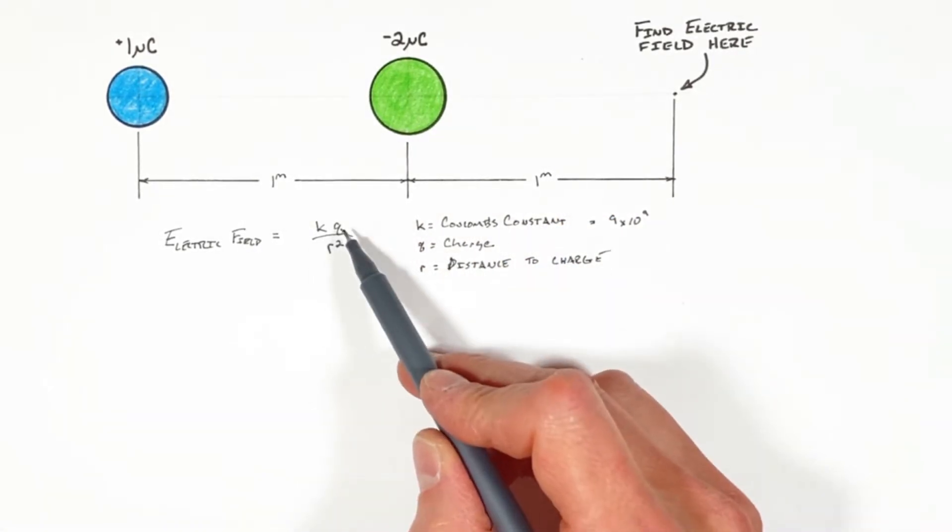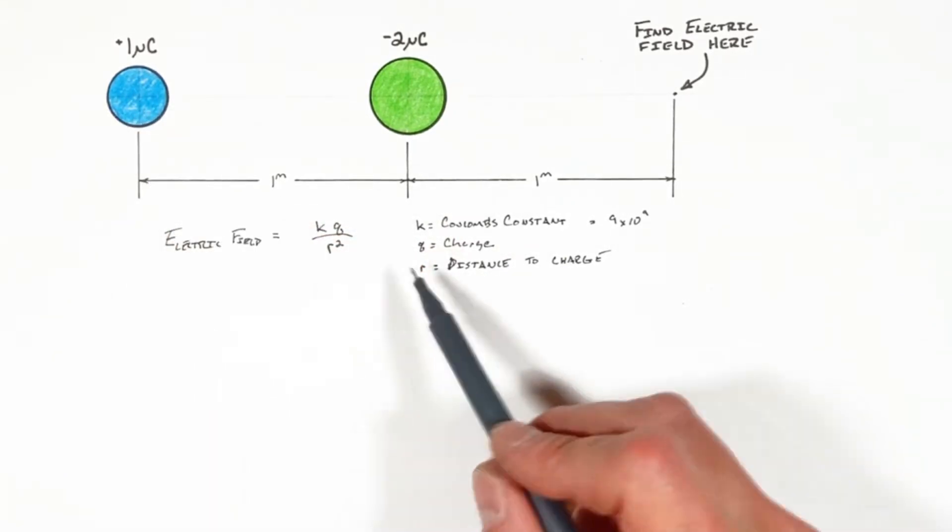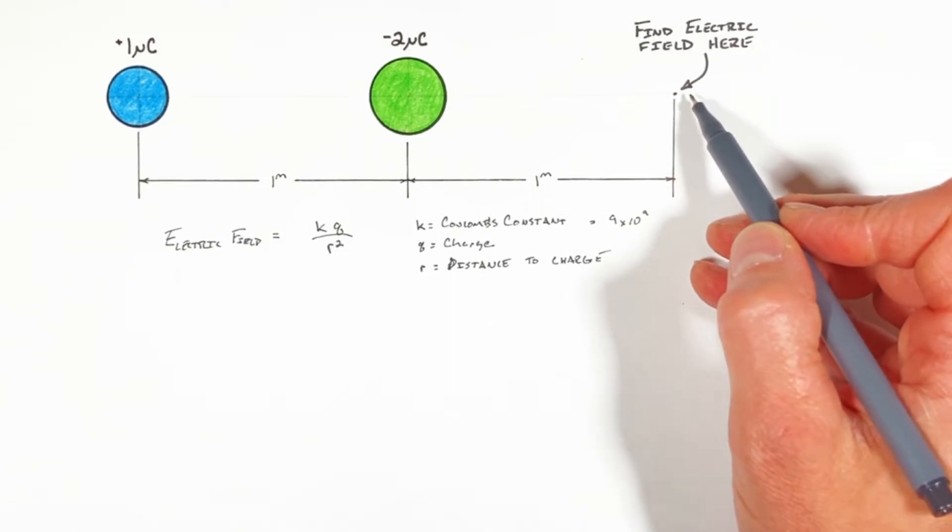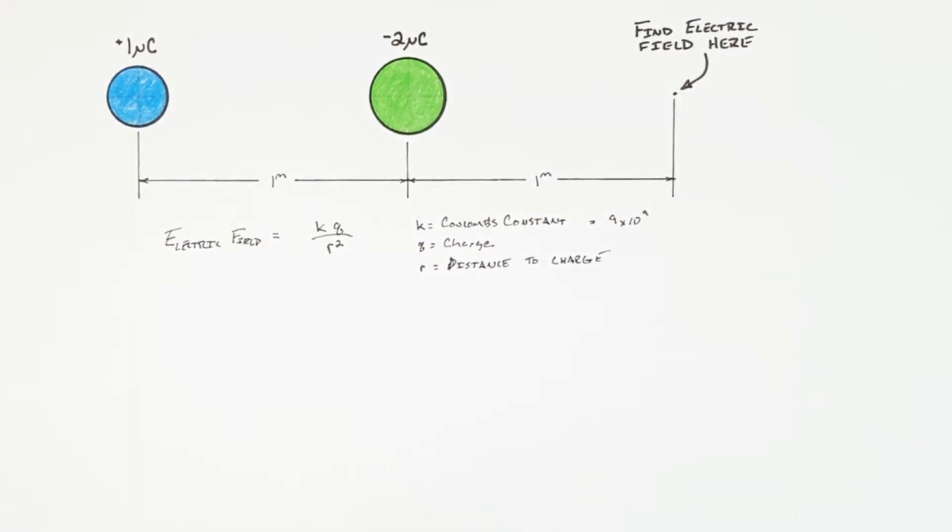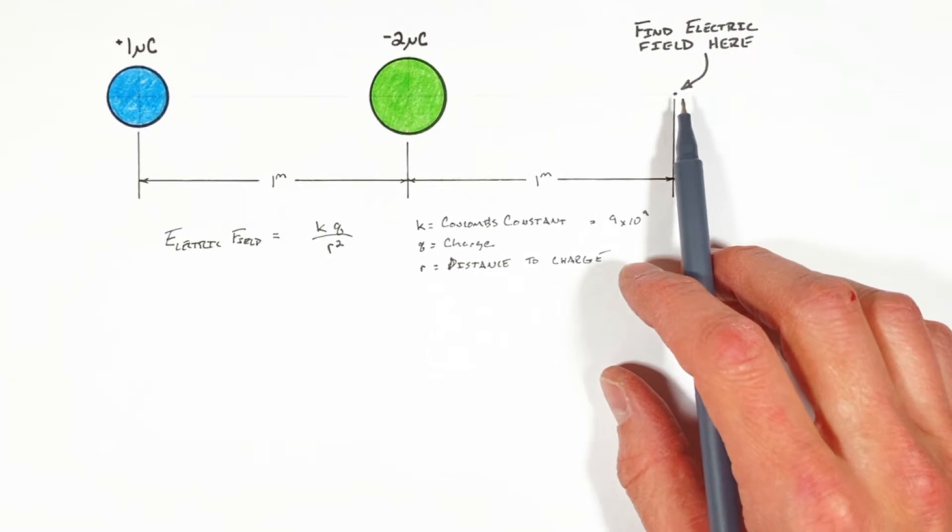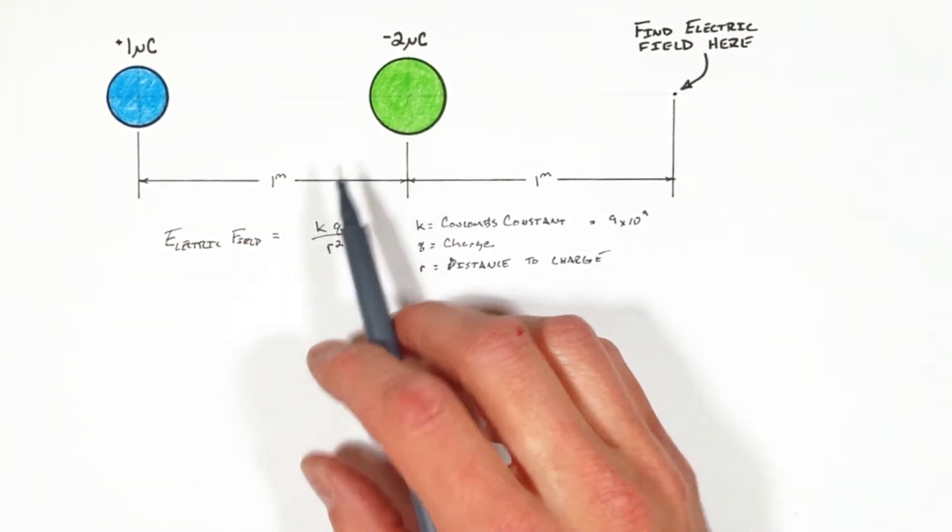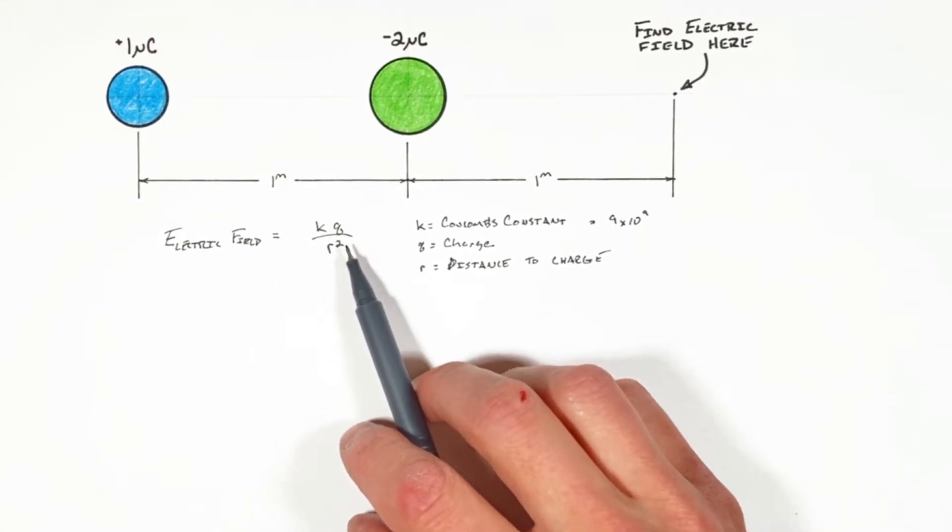K is Coulomb's constant, Q is the charge we're concerned with, and R is the distance between the point we're looking at and the charge that we're worrying about. Now the issue in finding the electric field at this point is that there's two charges in this problem, and so the question may come up: which charge do we use right here?